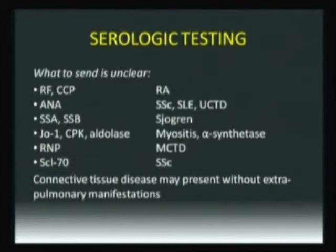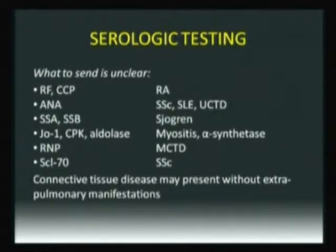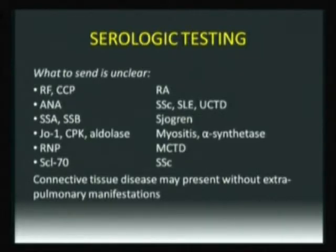JO-1, CPK, and aldolase for myositis; RNP for mixed connective tissue disease; SCL-70 for scleroderma. But we know that connective tissue disease may present without extra-pulmonary manifestations. So you can be in the presence of a patient with only pulmonary involvement and still have connective tissue disease. That's a very critical and difficult point that will be addressed in the next talk.